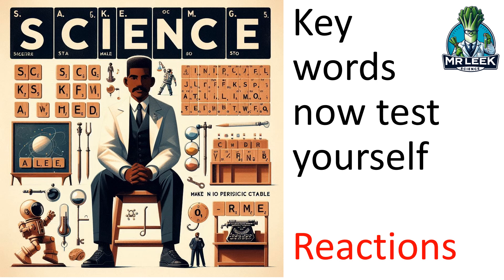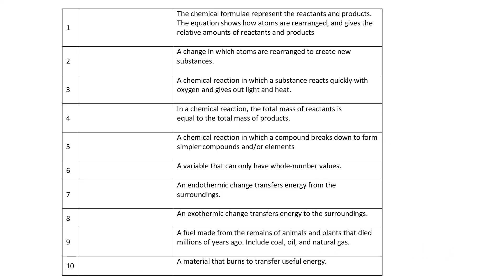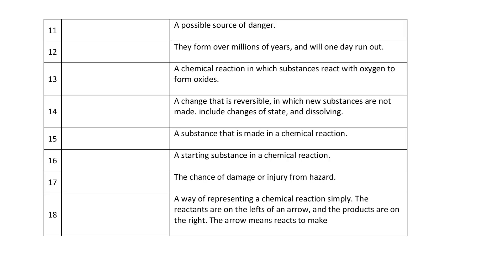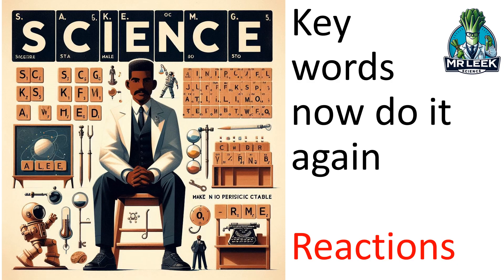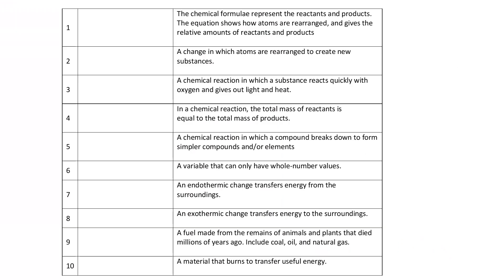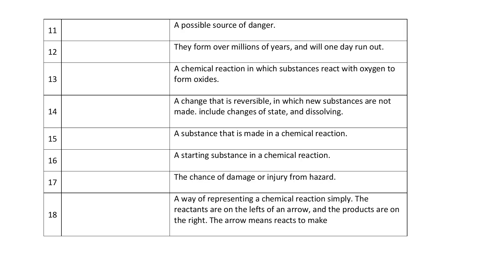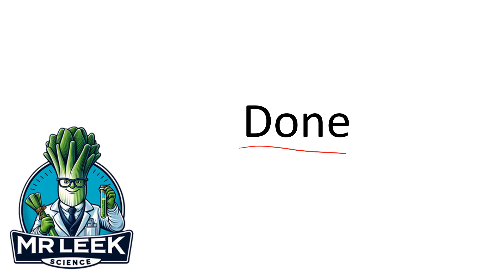We've just gone through all the key words for reactions. Now what you've got to do is test yourself — write them down, pause the video, into an exercise book. Hopefully you got them all right. If you did, fantastic, well done — do it again. If you didn't, try harder, look at the ones you got wrong and do it again. So now you've just got to know those words, and repeat them again at some point in the future.